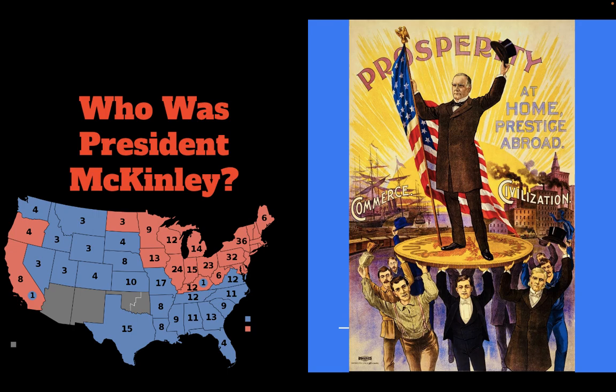His close friend, political operative and later senator and chairman of the Republican Party, Mark Hanna, convinced him to run for president in the 1896 election, where he faced down and ultimately defeated William Jennings Bryan.